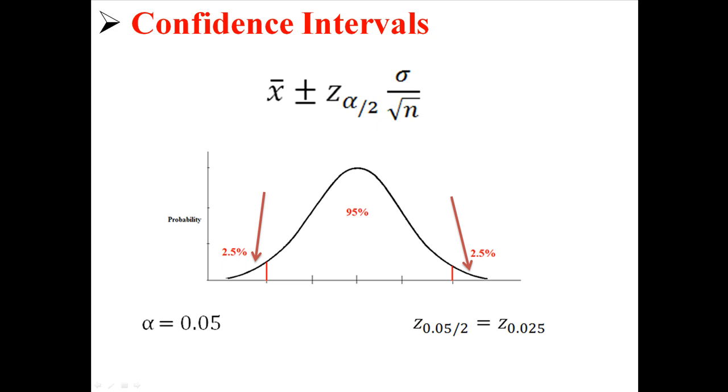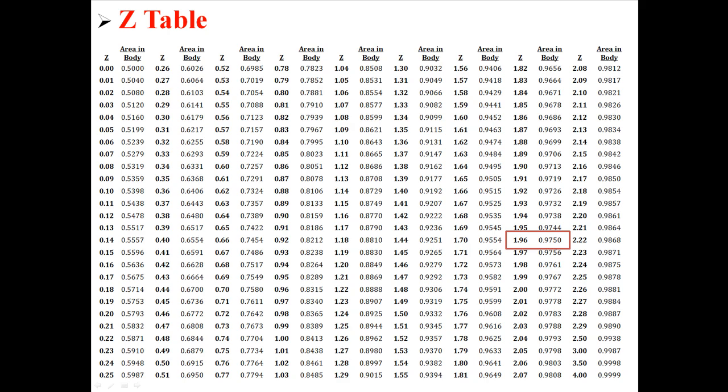What that means is, in that spot, we want to put the z-score for when the area in the tail is 0.025. You might remember this horrible z-table we looked at before. If the area in the tail is 0.025, that means the area in the body is 0.9750.